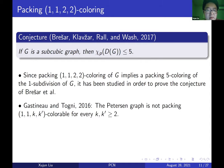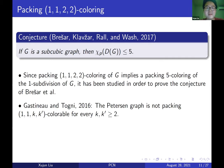In 2016, Gastineau and Togni showed the Petersen graph is not packing 1-1-k-k' colorable for any k, k' ≥ 2. So the Petersen graph is not 1-1-2-2 colorable. However, its one-subdivision still has a packing 5-coloring, so the conjecture is not disproved. In 2017, Brešar, Klavžar, Rall, and Wash showed that if G is a generalized prism of a cycle, then G is 1-1-2-2 colorable if and only if G is not the Petersen graph.